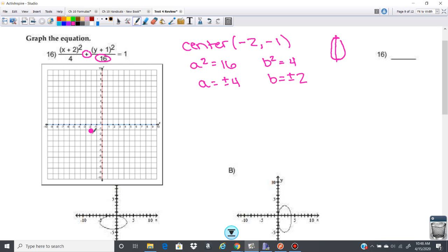And then I know it's going to be long ways up and down, so I'm going to go up 4: 1, 2, 3, 4, and down 4: 1, 2, 3, 4. And then my minor axis, my b, would be 2, so 2 left and 2 right. So those are the points for the ellipse.